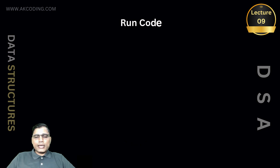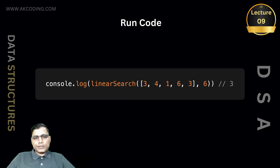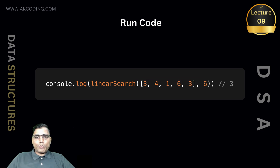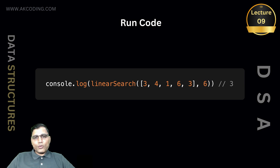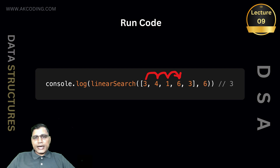Now let's run our linearSearch function with some sample inputs. We pass a sample array of 3, 4, 1, 6, and 3, with target value 6. In our linearSearch function, the for loop starts iterating from the beginning until it reaches element 6. When the loop reaches element 6, its index is 3, so the function returns index value 3.